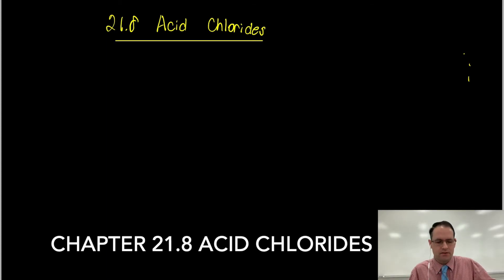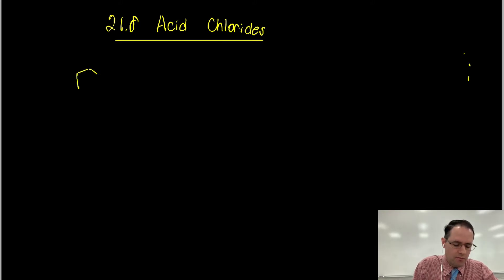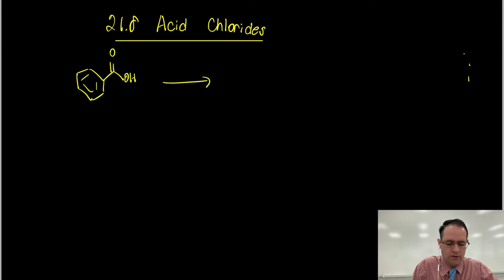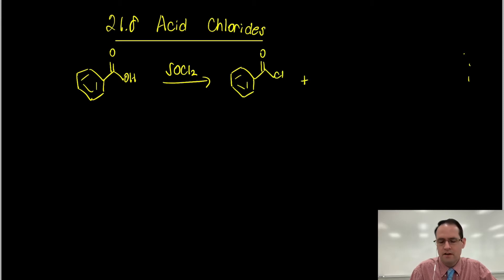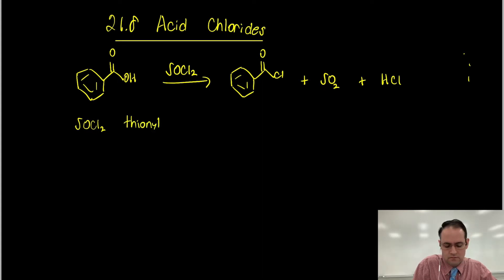Section 8 deals with acid chlorides, and there's pretty much only one way you can make acid chlorides as presented in the textbook - it's a fairly universal reaction. If we have something like benzoic acid and treat this with thionyl chloride, we can make benzoyl chloride. From this reaction we produce sulfur dioxide and hydrogen chloride.